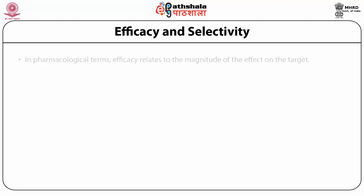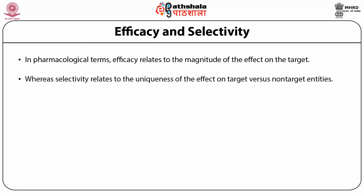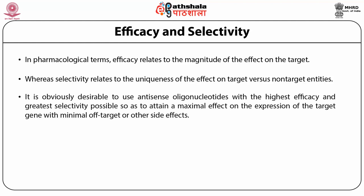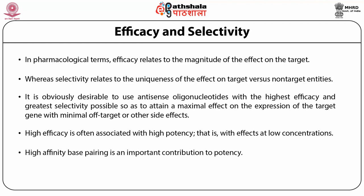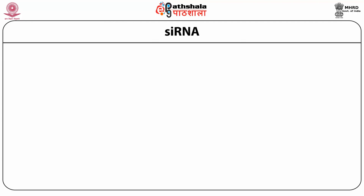Efficacy and selectivity: in pharmacological terms, efficacy relates to the magnitude of the effect on the target, whereas selectivity relates to the effectiveness of the target versus non-target entities. It is desirable to use antisense oligonucleotides with the highest efficacy and greatest selectivity possible, so as to attain a maximal effect on the expression of the target gene with minimal off-target or side effects. High efficacy is often associated with high potency, with effects at low concentrations. High affinity base pairing is an important contribution to potent siRNAs.